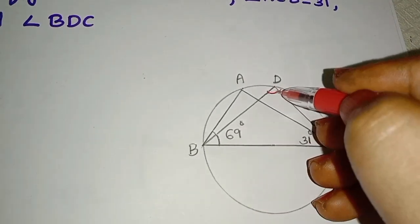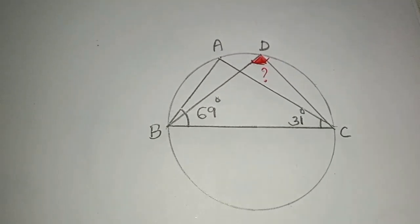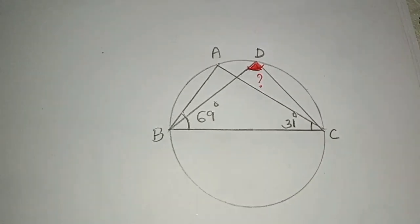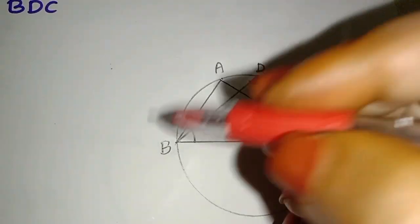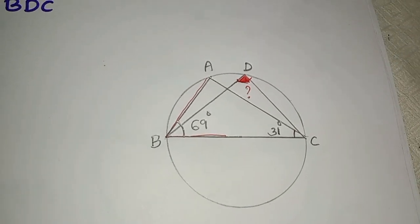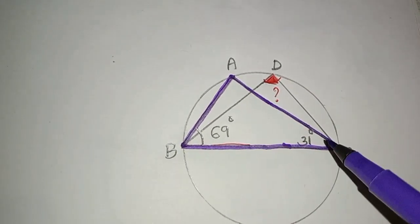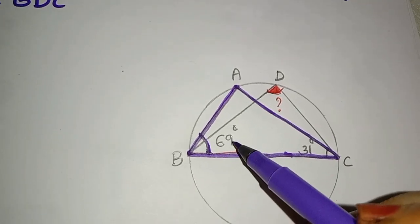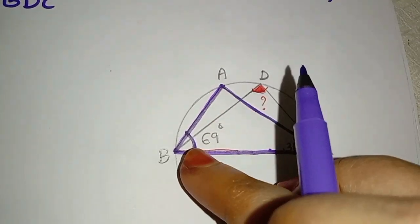We are going to study the figure. Angle C is 31 degrees and angle B is 69 degrees. In triangle ABC, we can identify two angles.